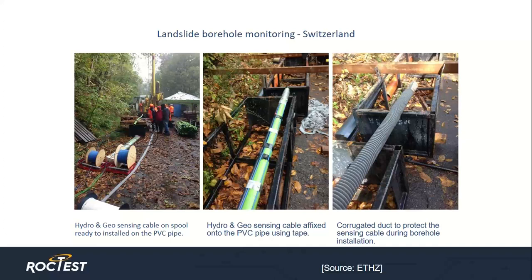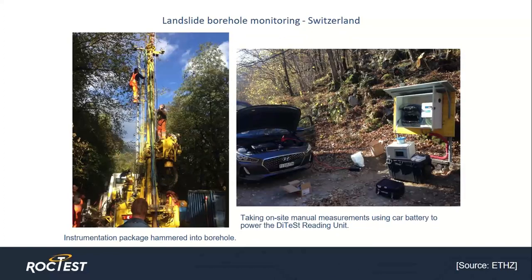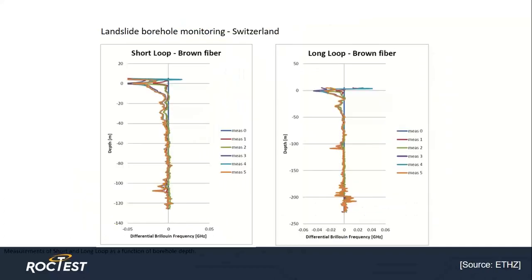The robust hydrangeo cable is able to survive shear movements on the order of 10 to 20 centimeters. The left-hand photo shows the instrumentation being inserted with the drill rig. The photo on the right shows manual readings being taken on site using a car battery to power the DITES reading unit. The data shown above reflects results from the short and long loops of fiber after interrogation, showing the strain evolution over time where strain increases along the horizontal axis at discrete depths.